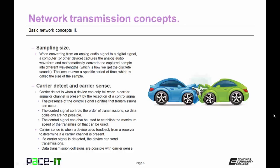And finally there's carrier detect and carrier sense. Carrier detect is when a device can only tell when a carrier signal or channel is present by the reception of a control signal. The presence of the control signal signifies that transmissions can occur. The control signal controls the order of transmissions, so data collisions are not possible. It can also be used to establish the maximum speed of the transmission. Carrier sense is when a device uses feedback from a receiver to determine if a carrier channel is present. If a carrier signal is detected, the device can send transmissions. Data transmission collisions are possible with carrier sense.